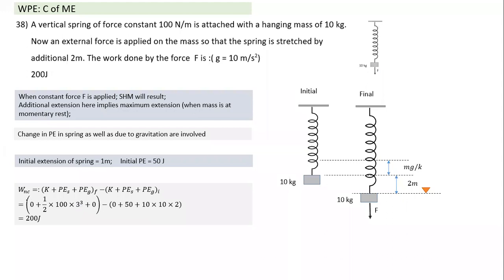Substituting: W_F = (0 − 0) + (450 − 50) + (0 − (−200)) = 400 + (−200) ... Let me recalculate. W_F = ΔKE + ΔPE_spring − mg·h = 0 + (450−50) − (10×10×2) = 400 − 200 = 200 J. Work done by the external force is 200 J.